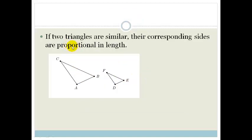The next statement says, if two triangles are similar, the corresponding sides are proportional in length. So, what that means is that if we've got two triangles, and we're told they're similar, then we would be told the order.